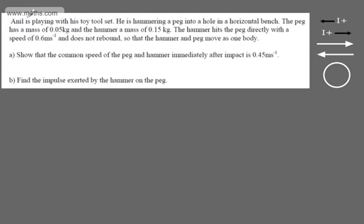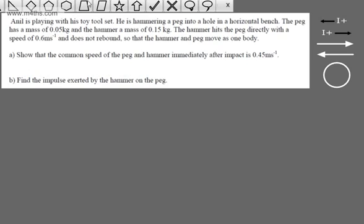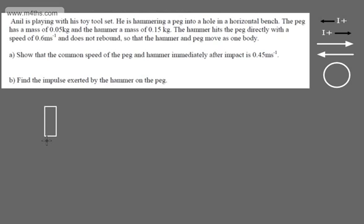Let's look at one more question. Anil is playing with his toy toolset and is hammering a peg into a hole in a horizontal bench. The peg has a mass of 0.05 kg and the hammer a mass of 0.15 kg. The hammer hits the peg directly with a speed of 0.6 meters per second and does not rebound, so that the hammer and the peg move as one body. In part A we're asked to show that the common speed immediately after impact is 0.45 meters per second, and in part B to find the impulse exerted by the hammer on the peg.